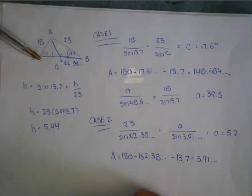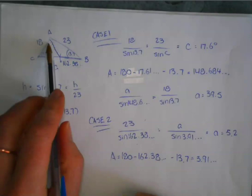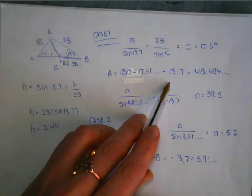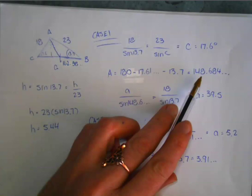And then, of course, I want to know angle A here. Don't mind the swinging arm moved in for my second case here. So I'm solving for this whole angle, so 180 minus the 17.6 minus the 13.7, which leaves me with an angle here of 148.684.